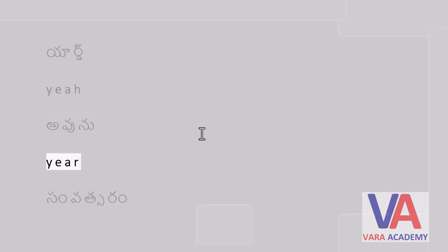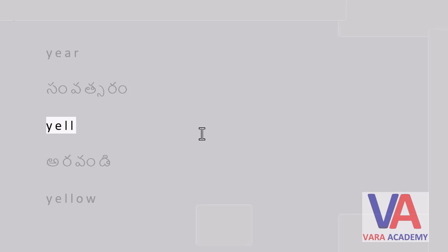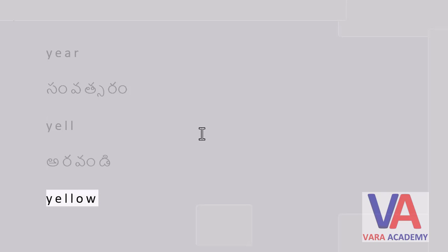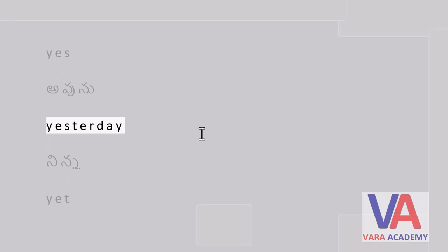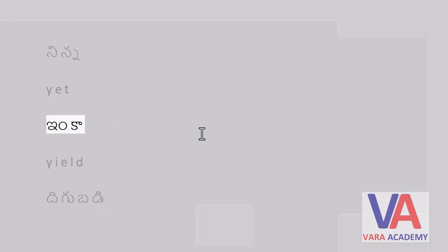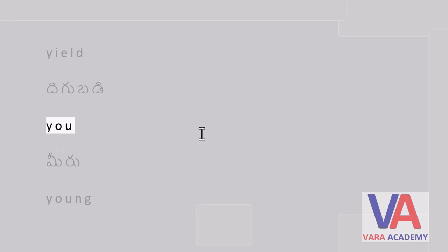Yair — Samwat Saram. Yal. Yellow — Pasuku. Yes — Ahunu. Yesterday — Ninna. Yet — Inka. Yield — Diggubadhi. You — Meiru.